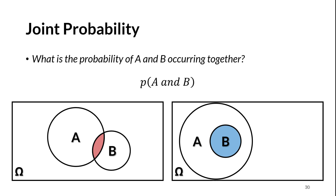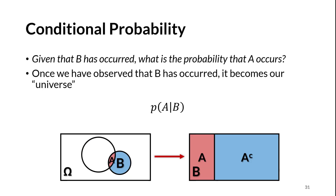Conditional probability is extremely useful in statistics. Conditioning adds information, because we start with a statement of knowledge — generally saying 'given that.' In our diagram, we know B has already occurred, so we only look at what happens inside event B. Inside B are two events: A, which is the part overlapping the other circle, and A complement — all of B that is not also in A. Notice how the area for A in red is larger than before. The conditional probability of A occurring given that B has occurred is larger than the marginal probability of A.